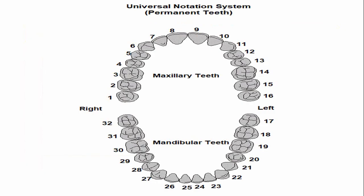Now we will discuss the number of this tooth in various tooth notation systems. The first is the universal notation system. In the universal numbering system, there are two mandibular central incisors: for the right mandibular central incisor the number is 25, and for the left it is 24. So 24 for the left and 25 for the right mandibular central incisor.